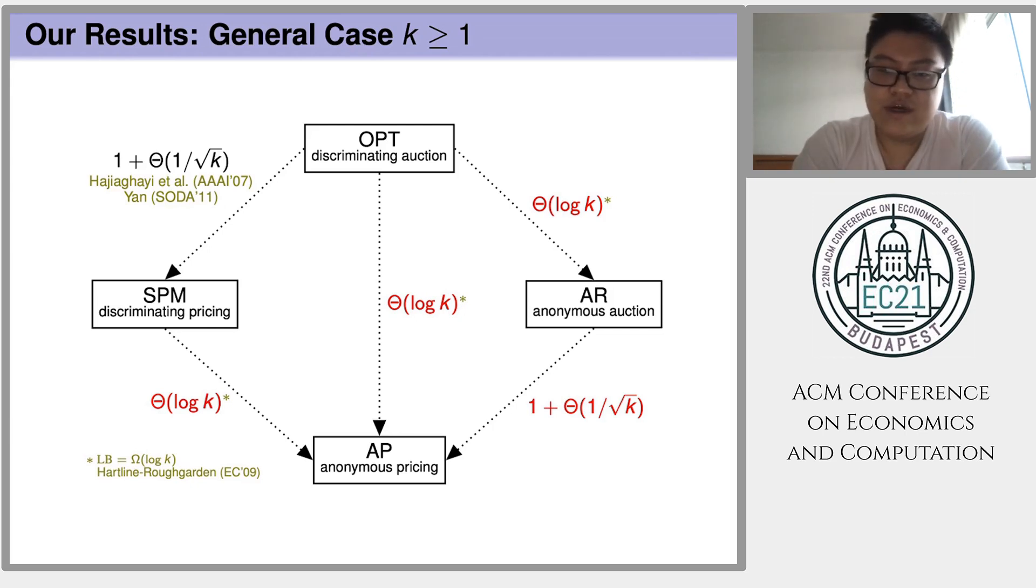In particular, for these three bounds, the one between SPM and AP, the one between OPT and AP, and the one between OPT and AR, we prove that log k is not only a lower bound, but actually an upper bound. Hence, the tight bound is also of order log k. Furthermore, for the bound between AR and AP, we show that it is of order 1 plus 1 over root k.